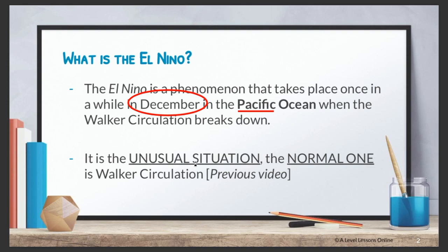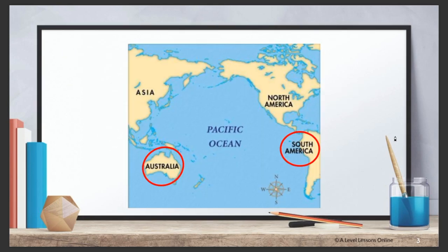So what is El Niño? El Niño is a phenomenon that takes place once in a while in December in the Pacific Ocean, when the Walker Circulation breaks down. Walker Circulation is the normal situation that happens every single day and month in the Pacific Ocean. El Niño, on the other hand, is basically an unusual situation — meaning it doesn't always happen.